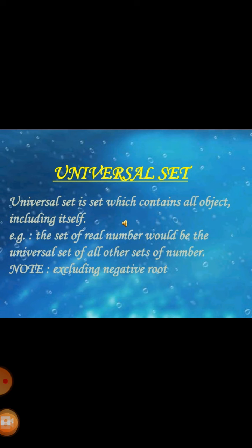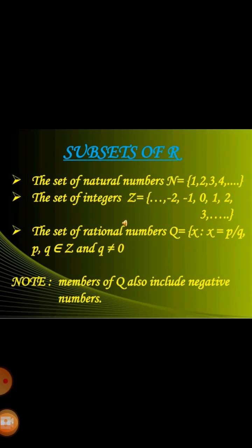Next we discuss subsets of R. The set of natural numbers is represented by N. Here we have some natural numbers: 1, 2, 3, 4, and so on. The set of integers is represented by Z in mathematics. The set of rational numbers Q — members of Q also include negative numbers.